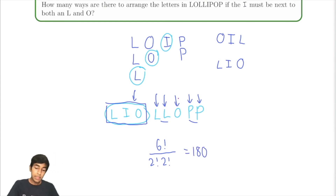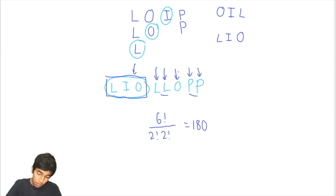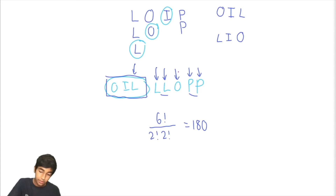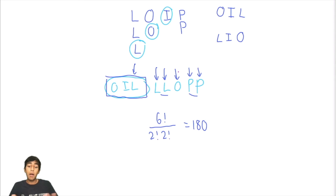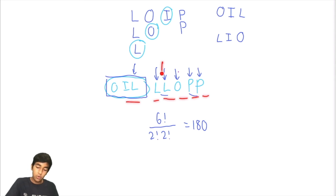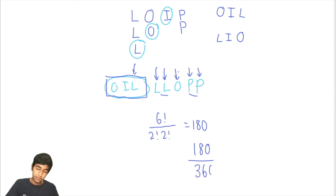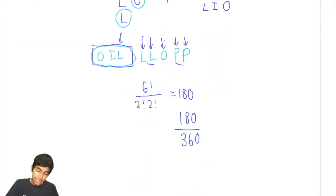And it's the same thing if instead of L, I, O the group is O, I, L — again one group, six characters, two L's, two P's, giving the same result: 180. We add the two cases together and get 360. So our answer is 360.